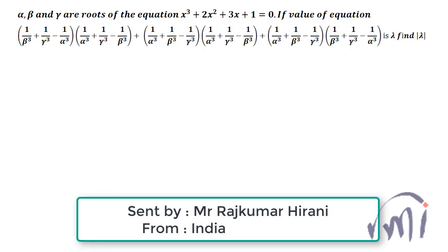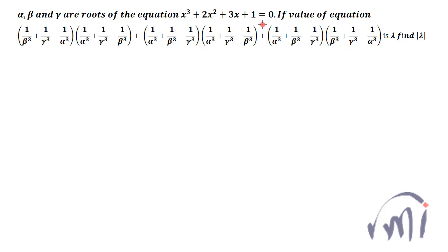Hi, so here we have a problem which was sent by Mr. Rajkumar Hirani from India. In this problem, alpha, beta and gamma are roots of the equation x³ + 2x² + 3x + 1 = 0, and if the value of a given long expression in terms of the roots of this equation is lambda, then we have to find the value of modulus of lambda.